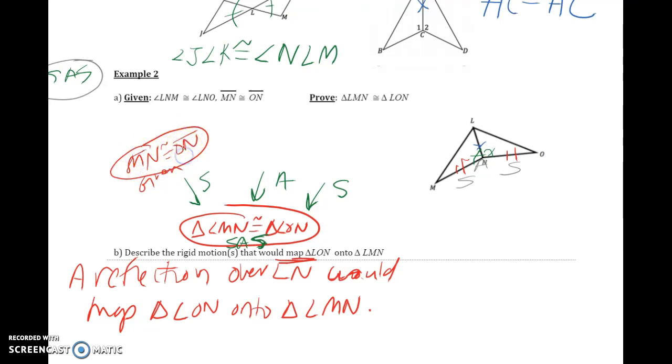I have an angle as well, so angle LMN is congruent to angle LNO, and that was given. And so what I'm missing is the next side.